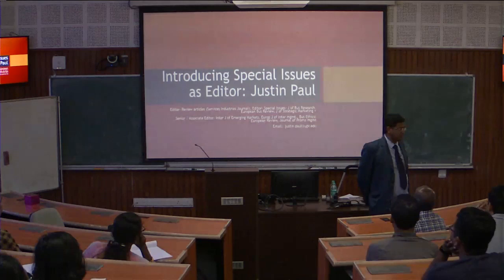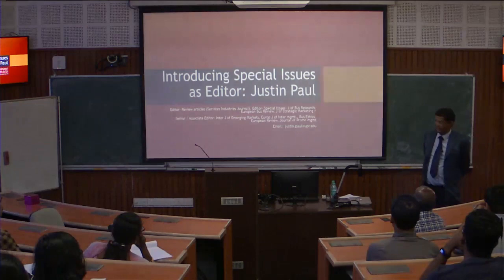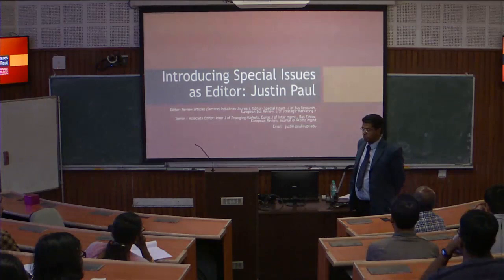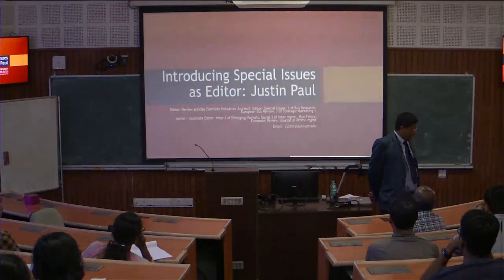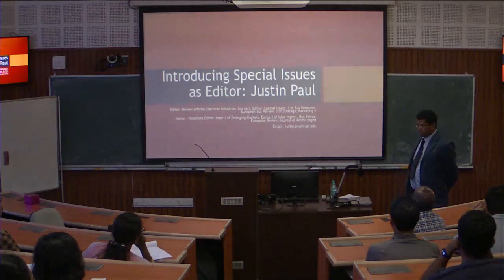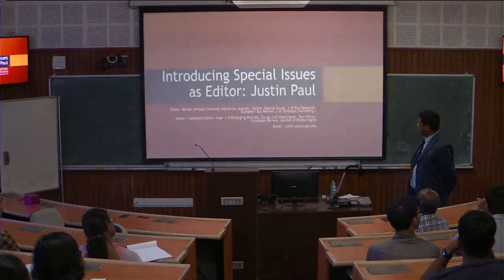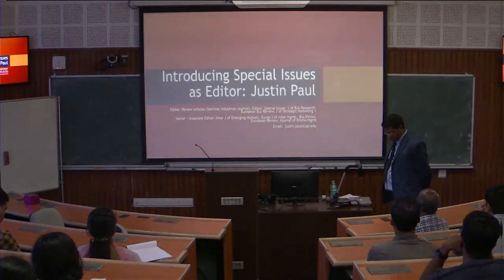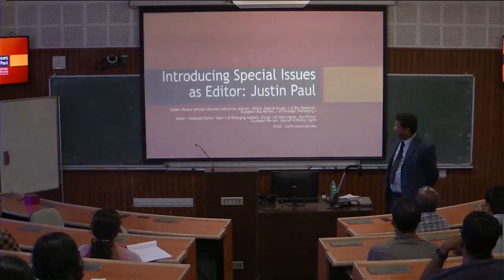My presentation today consists of two parts. The first part, I'm going to introduce four special issues that we have launched for different journals, covering expectations and requirements. Then I will specifically talk about seven types of systematic review articles. I've been serving as an editor on a daily basis for a couple of journals, and in addition to that role as associate editor or senior editor, I took initiative to launch special issues for Journal of Business Research, Services Industries Journal, Journal of Strategic Marketing, and European Business Review during this academic year.